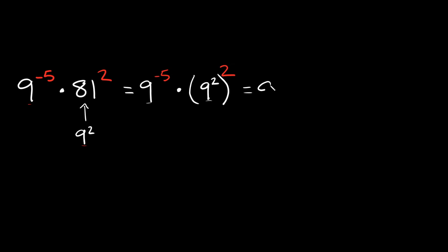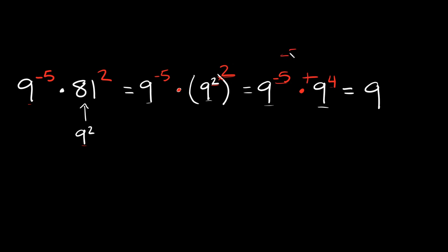So we have nine raised to the negative fifth power, times nine squared raised to the second power. We have an exponent raised to another exponent, so we multiply those together: two times two is equal to four. So here we're going to have nine raised to the fourth power. That gives us nine raised to the negative fifth times nine raised to the fourth power. Same base, so we add the exponents: negative five plus four equals negative one. So we have nine raised to the negative first power.